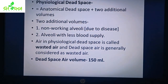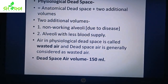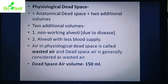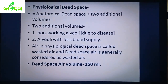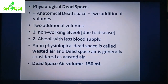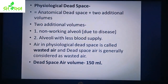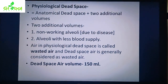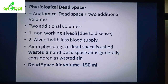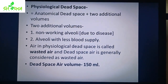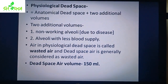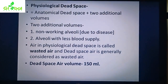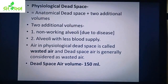Physiological dead space equals anatomical dead space plus two additional volumes. The first is non-working alveoli — alveoli that are not functioning, perhaps due to disease or damage. The second is alveoli with less blood supply. Air in physiological dead space is called wasted air, because no gaseous exchange occurs there — either the alveoli are non-functional or blood supply is insufficient.